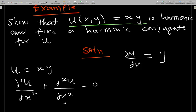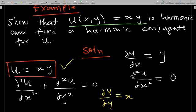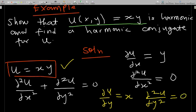First find ∂u/∂x, which is equal to y. Then ∂²u/∂x² is zero because there is no x in y. Then ∂u/∂y is equal to x, and ∂²u/∂y² is also equal to zero, because in the first partial derivative with respect to y we had only x, and differentiating x with respect to y gives zero.